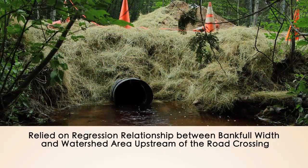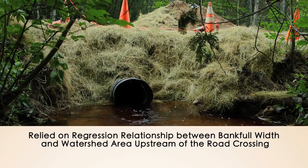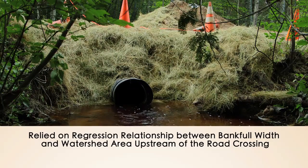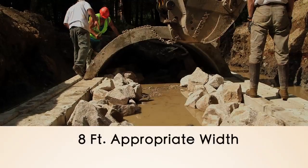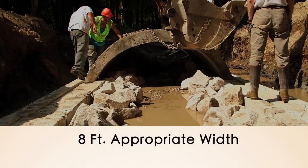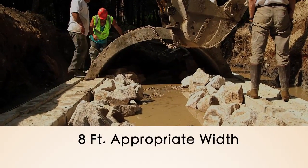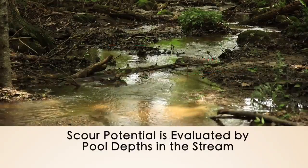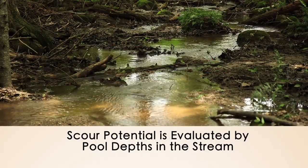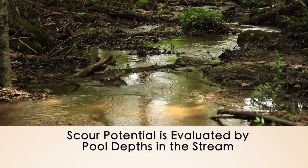Therefore, in order to determine bankfull width, we relied on a local regression relationship between bankfull width and watershed area upstream of the road crossing, establishing 8 feet as the appropriate width for the replacement structure. The longitudinal profile establishes the elevation of the stream channel through the road crossing and channel gradient. Scour potential is evaluated by observing the pool depths in the stream.